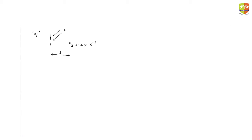Let's say the wavelength is lambda, so the energy of the photon will be hc/lambda. Now if the work function is phi, the kinetic energy of the electron emitted from the metal surface will be hc/lambda minus phi. This is the maximum kinetic energy of the electron coming out, and this will be equal to half m times v squared. So this is your first equation.